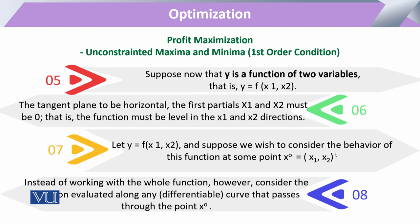Now there is a case when the output is a function of two inputs. Keeping in view the necessary condition from the previous example, we now take first partial derivatives. When we say partial derivative, it means we measure the change in y with respect to xi while keeping the other input constant. To measure the change in y with respect to x1, we keep x2 constant. To measure the change in y with respect to x2, we keep x1 constant.